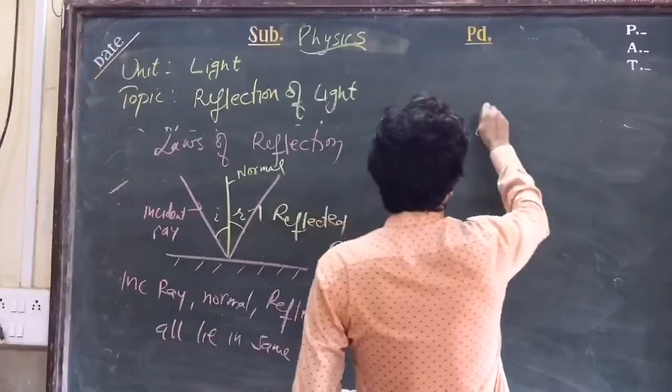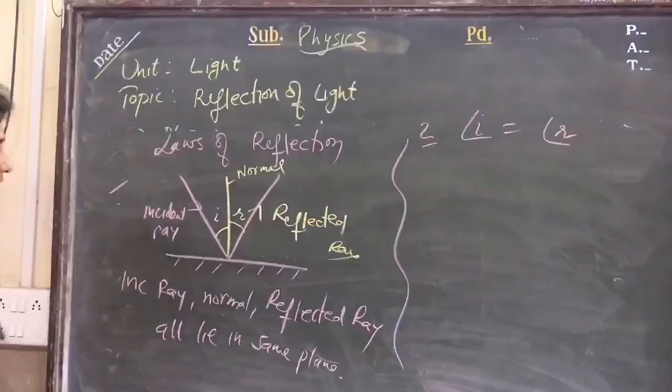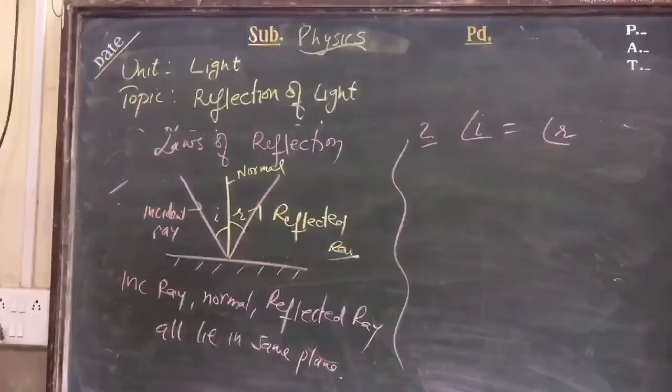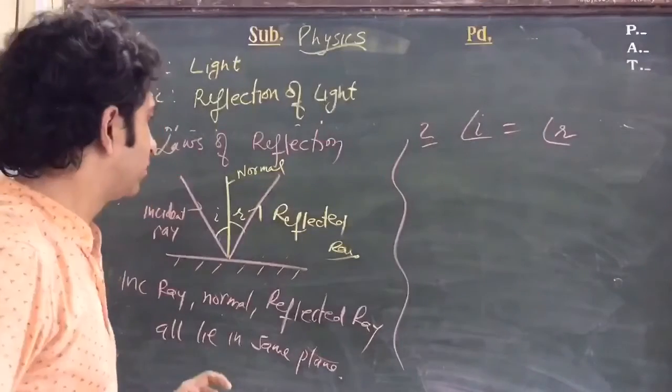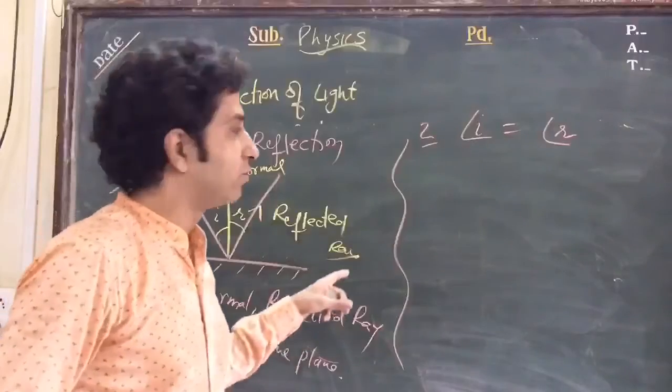Second is angle of incidence will be equal to angle of reflection: i = r. For reflection, these are two laws that should be followed.